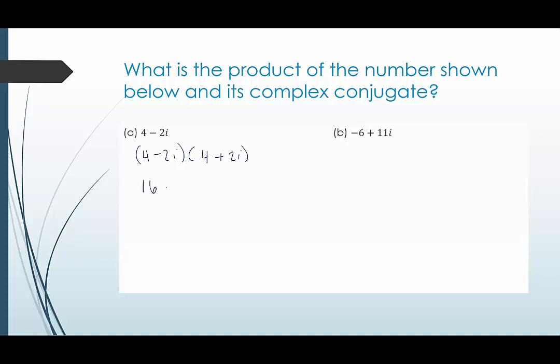This would give us 16 plus eight i minus eight i minus four i squared. This becomes negative four times negative one, so this becomes plus four. The eight i and the negative eight i cancel. We have 16 plus four, so we end up with a result of 20.